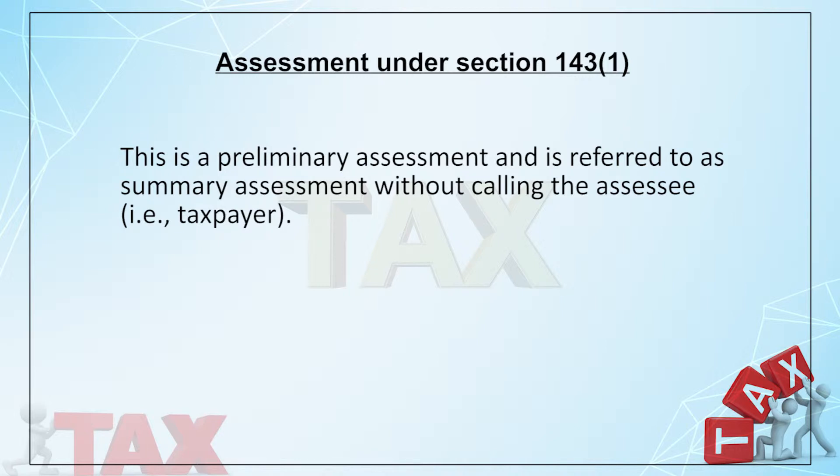The provision for assessment starts with Section 143, and subsection 1 is the initiation. Section 143(1) says that when the assessing officer receives a return and prima facie finds that the tax liabilities are properly calculated and the tax due has been deposited to the government account — either by way of TDS, advance tax, or self-assessment tax — for example, an ordinary salaried employee whose employer deducts tax and deposits it, and who may also earn fixed deposit interest on which the bank deducts tax, with the balance paid by the assessee — all documents are placed in the assessment record.